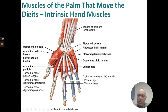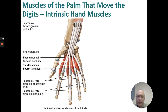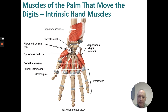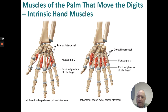Intrinsic hand muscles: opponens pollicis, abductor pollicis brevis, flexor pollicis brevis, adductor pollicis, lumbricals (first through fourth), opponens digiti minimi, flexor digiti minimi brevis, and abductor digiti minimi. More intrinsic hand muscles deep: the four lumbricals. A few more: opponens pollicis, opponens digiti minimi, and dorsal and palmar interossei. The palmar interossei are visible from the anterior view and the dorsal interossei from a deeper cut.